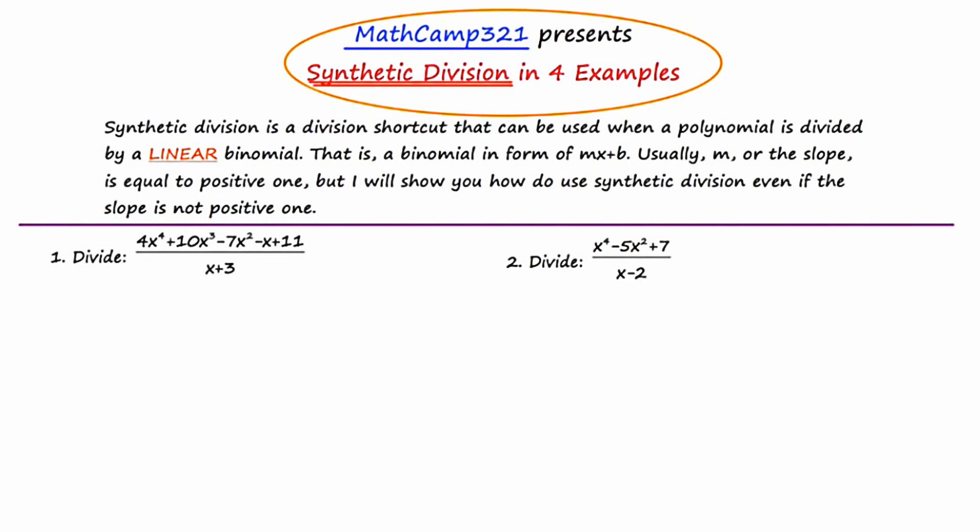Hey there! This is MathCamp321, presenting a short video on synthetic division in four examples. What is synthetic division? Synthetic division is a division shortcut that can be used when a polynomial is divided by a linear binomial — that is, a binomial in the form of mx plus b. Usually m, or the slope, is equal to positive 1, but I will show you how to do synthetic division even if the slope is not positive 1, and those examples will occur on the next slide.